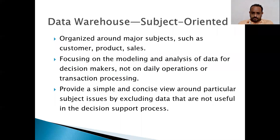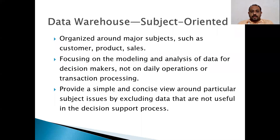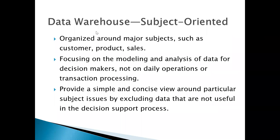Take a college example: with branches like CSE, EEE, and Civil/Mechanical, each branch has one HOD who takes care of that individual department. The principal or director oversees all departments. In data warehousing, you can easily get individual department data because it deals with different subject-oriented categories. It provides a simple and concise view around a particular subject, excluding data not used for running the business — only for analysis.